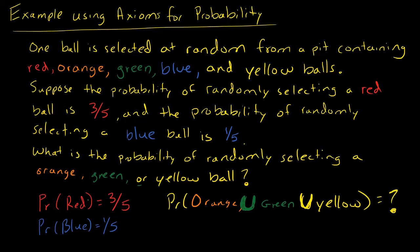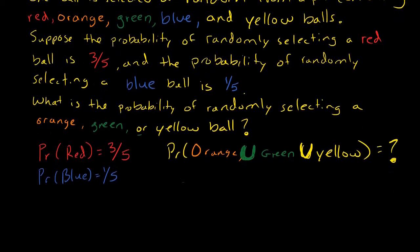So they've given me the probability of red and blue, and I want to figure out the probability of basically not getting red or blue. Now I want to use the axioms for probability. Just as a gentle reminder, I talked about the axioms in more detail in a previous video.